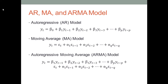From a mathematical standpoint, we can present time series data in three ways. The first one is called an autoregressive model. The second one is called a moving average model. The third one is a combination of autoregressive and moving average models. Let's talk about them one by one.